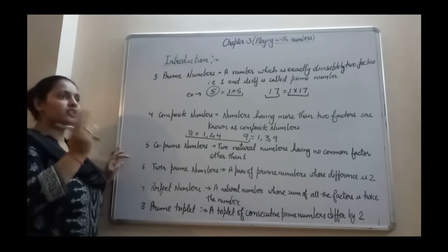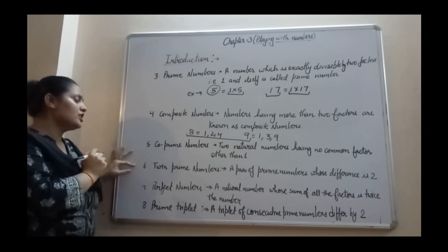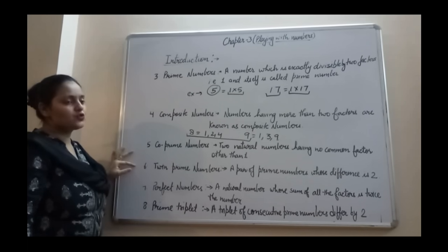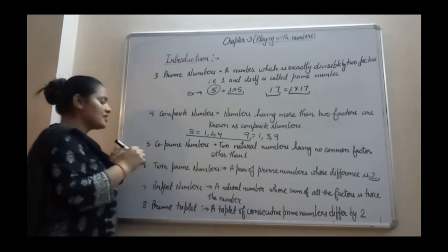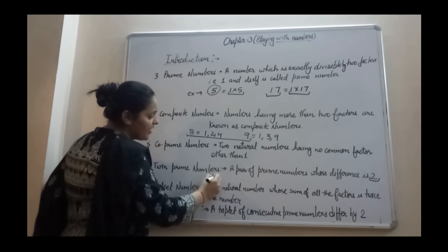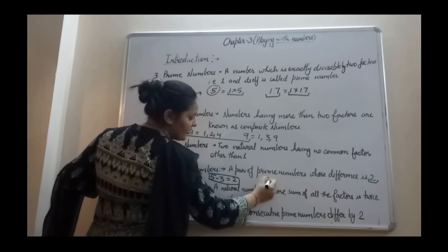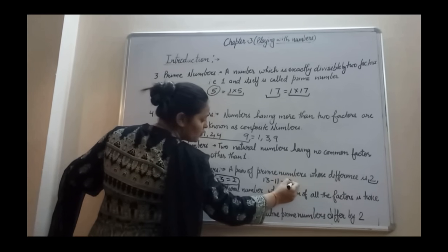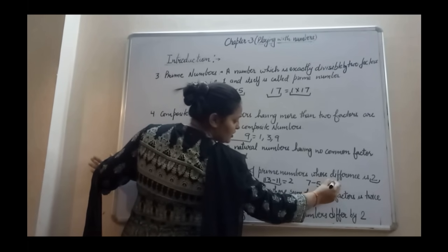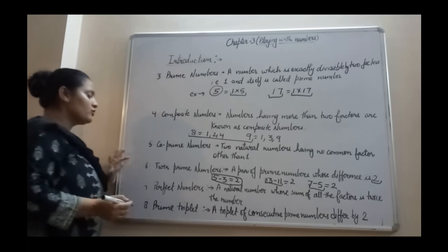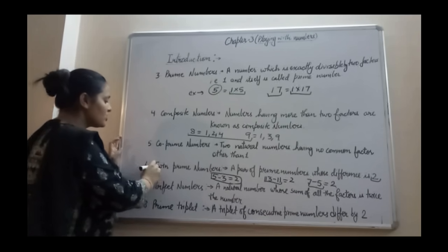The sixth type is twin prime numbers: a pair of prime numbers whose difference is 2. When you subtract two prime numbers and their difference is 2, those two prime numbers are called twin primes. For example, 5 and 3: 5 minus 3 equals 2, so 5 and 3 are twin prime numbers. Similarly, 13 and 11: 13 minus 11 equals 2, so they are twin primes. Also 7 and 5: 7 minus 5 equals 2, so they are also twin prime numbers.